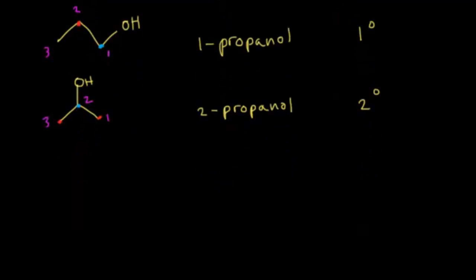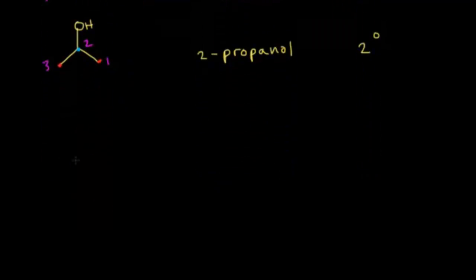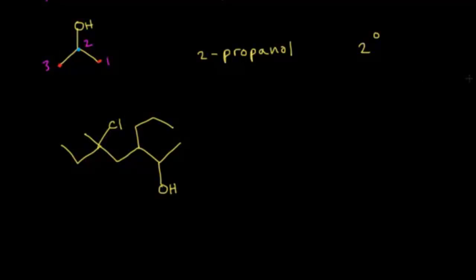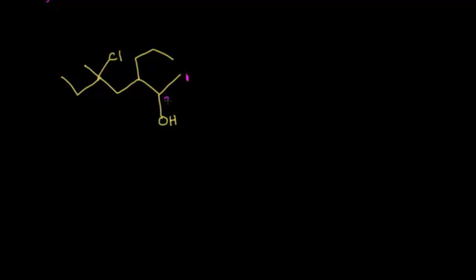Let's do a more complicated nomenclature question with a larger molecule and more substituents. You want to find the longest carbon chain that includes the OH and give the OH the lowest number possible. Starting from the left, numbering carbon 1 through 7, we have a 7-carbon alcohol — heptanol. The OH is on carbon 2, so we write 2-heptanol.